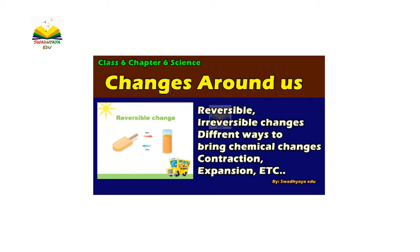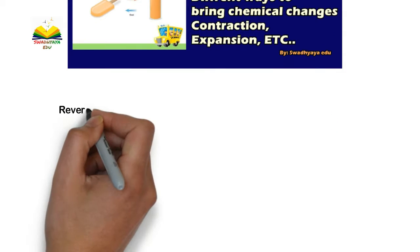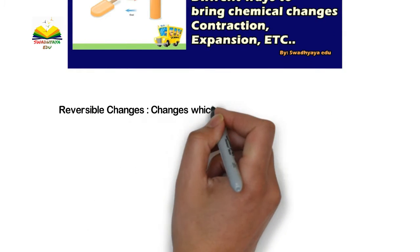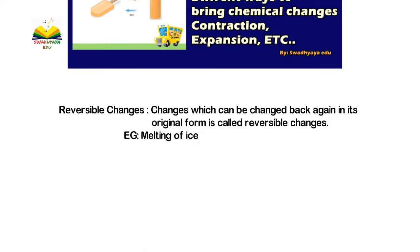This chapter covers reversible changes, irreversible changes, different ways to bring chemical changes, contraction, expansion, and evaporation. Starting with the most important topic: reversible changes are changes which can be changed back again to their original form. This is called a reversible process, like the melting of ice.